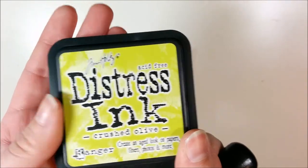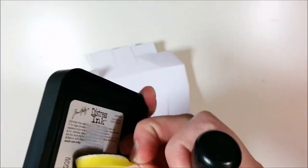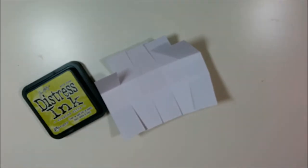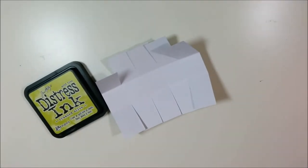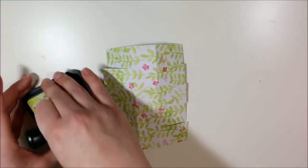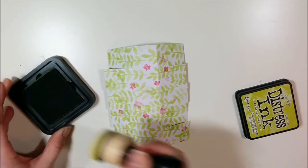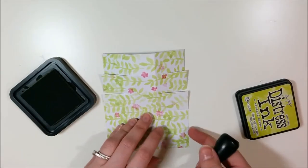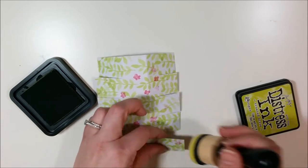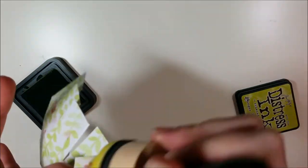Now I just wanted to add a little extra to my basket. So I'm going to ink around the edges of each one of those rectangle flaps. I'm using distressed ink. Crushed, I believe it's crushed olive. Maybe. And ink around the edge of each one.